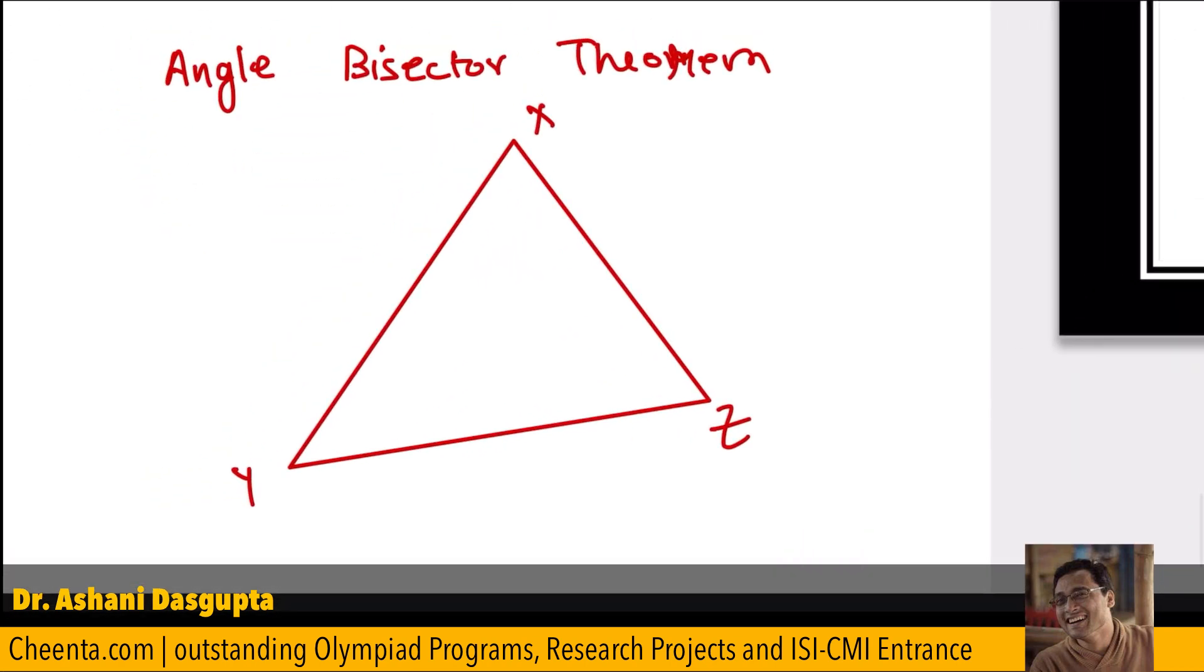And suppose this particular point here is T such that XT is the angle bisector. XT bisects angle X. Then the angle bisector theorem tells us, the angle bisector theorem tells us that the ratio of the sides containing that angle, that is XY over XZ,